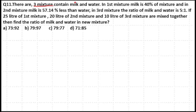There are three mixtures containing milk and water. In the first mixture, milk is 40% of the mixture. In the second mixture, milk is 57.14% less than water. In the third mixture, the ratio of milk to water is 5:1. If 25 liters of the first mixture, 20 liters of the second mixture, and 10 liters of the third mixture are mixed together, find the ratio of milk and water in the new mixture.